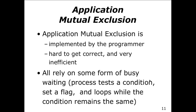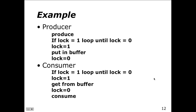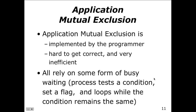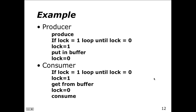From an application perspective, mutual exclusion implemented by the programmer is hard to get correct and very inefficient. You end up adding conditional checks that slow down your program. It may rely on a form of busy waiting — the process tests a condition, sets a flag, and loops until the condition changes. A busy wait takes up CPU cycles without getting any work done. The producer checks if lock equals 1, loops back until lock equals 0, sets the lock to 1, puts something in the buffer, then sets the lock back to 0. The consumer does the exact opposite.